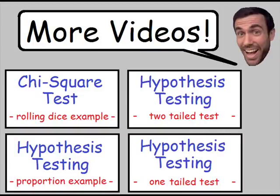I hope this video gave you a better idea of how to perform a chi-square test. I have another chi-square example involving rolling a dice — the link is in the top left corner. I also provided links for all of my hypothesis testing videos. Thank you so much for watching, don't forget to subscribe, and I will see you in my next one.